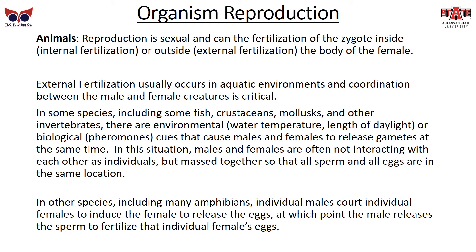Reproduction in animals is sexual. Fertilization of the zygote can be done internally or externally outside the body of the female. External fertilization usually happens in aquatic environments — common in fish, crustaceans, molluscs, and other invertebrates. Environmental and biological cues such as water temperature, daylight, and pheromones cause males and females to release their gametes at the same time. In some species, including many amphibians, individual males court individual females to induce the female to release eggs, at which point the male releases sperm to fertilize them.